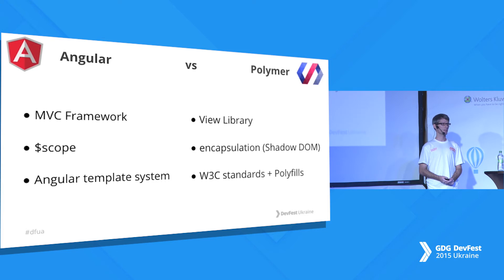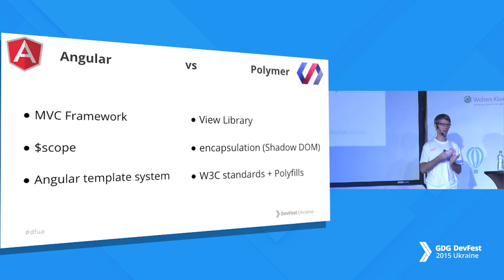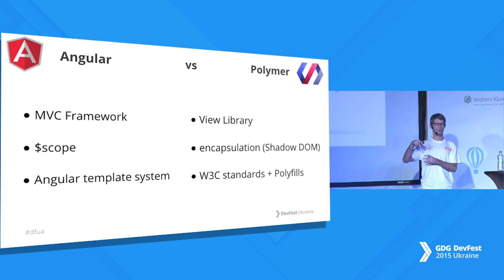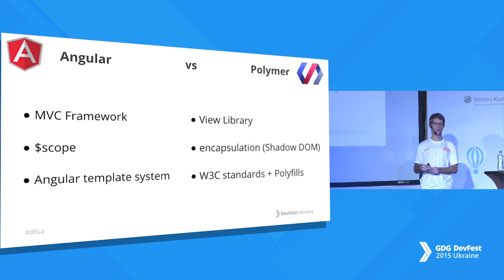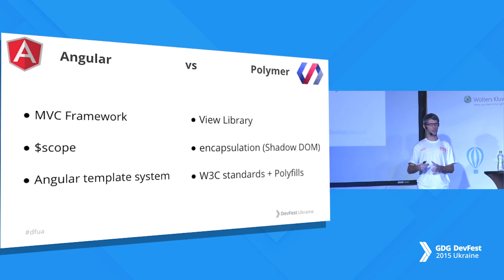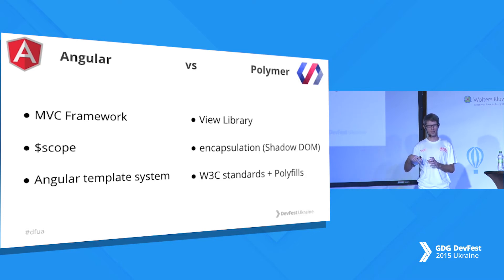Angular has scope — a way to render your models in your views. Polymer has encapsulation. There are problems with scope because it can change behavior in your controller. If you change something in a directive, it can change the rest of your application — for example, if you use the same scope in multiple components. But Polymer uses encapsulation: if you define models in your component, they can't affect other components. Everything you change in your component stays in the component, so it doesn't have the problems with scope.